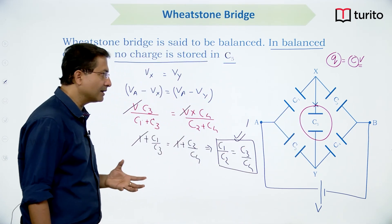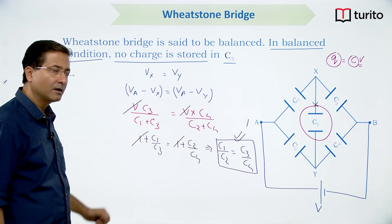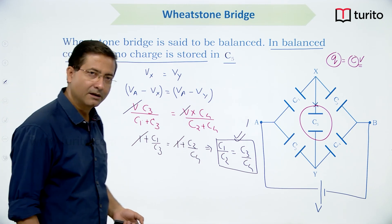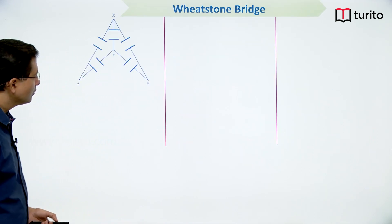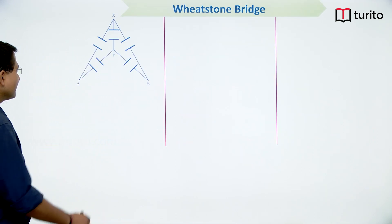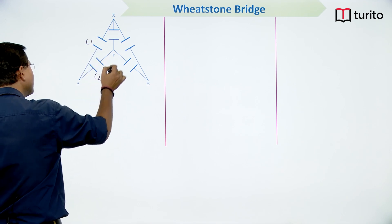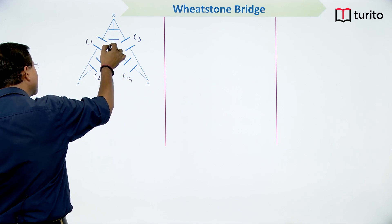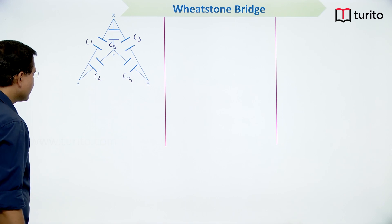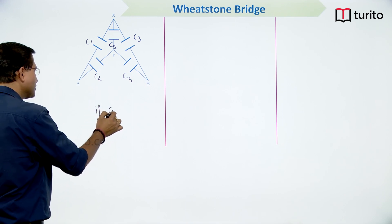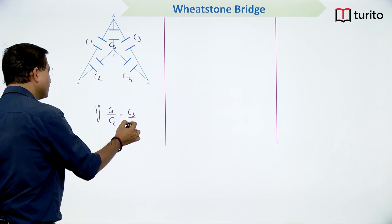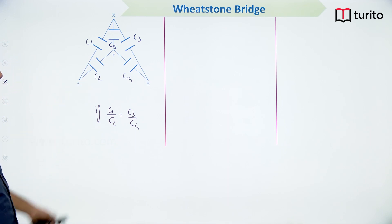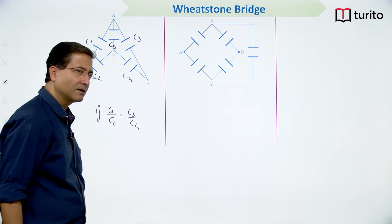By closely looking at the circuit you will realize whether it is in balanced state or not. The circuit might also be drawn with the battery inside and capacitors outside, or in a circular form. In all these cases, if C1/C2 = C3/C4, the middle capacitor can be removed and the circuit simplified.